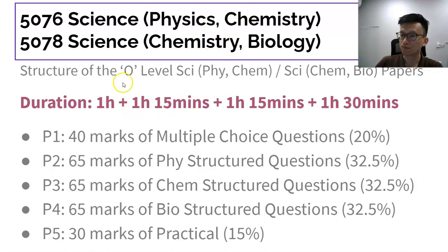If you take up a combined science combination, either Physics-Chem or Chem-Bio, the format is as such. There will be paper one, one hour, 40 marks of MCQ. You will take paper two, paper three, or paper four based on what you chose as combined science. Each paper is one hour 15 minutes, and there's a practical that is one hour 30 minutes. The combined science coverage is about half or a little bit more than half of a pure science subject, both in depth of understanding and time commitment.